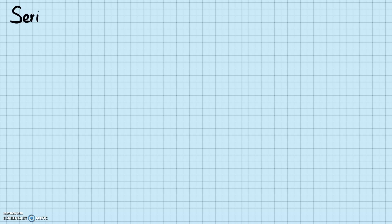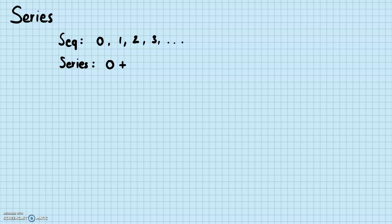We've looked into sequences, and now we're going to learn about series. Series are basically sequences but with addition. For example, with sequences we had a sequence of numbers like zero, one, two, three, etc. For series, we are adding each of these numbers: zero plus one plus two plus three, etc. A series is going to have some numerical value, or it could be infinity.